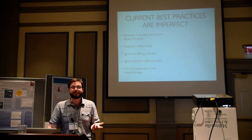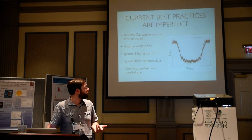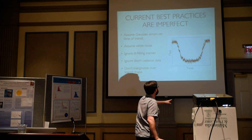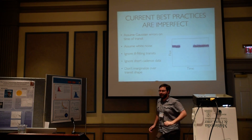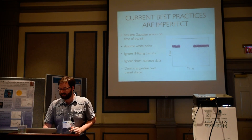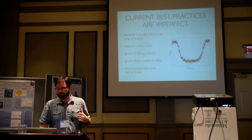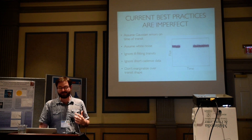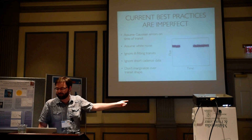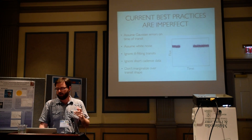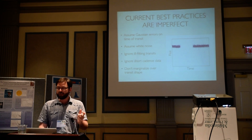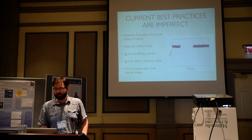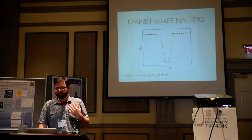Sometimes this doesn't matter — if you have a clear transit, the time of transit is easy to spot and you have to do a lot to mess it up. But what about a transit that falls in a data gap? Kepler wasn't perfect; there are gaps in the data. If a transit falls in there it's generally thrown out, but really you have some information — it's somewhere in the middle, kind of uniform probability.